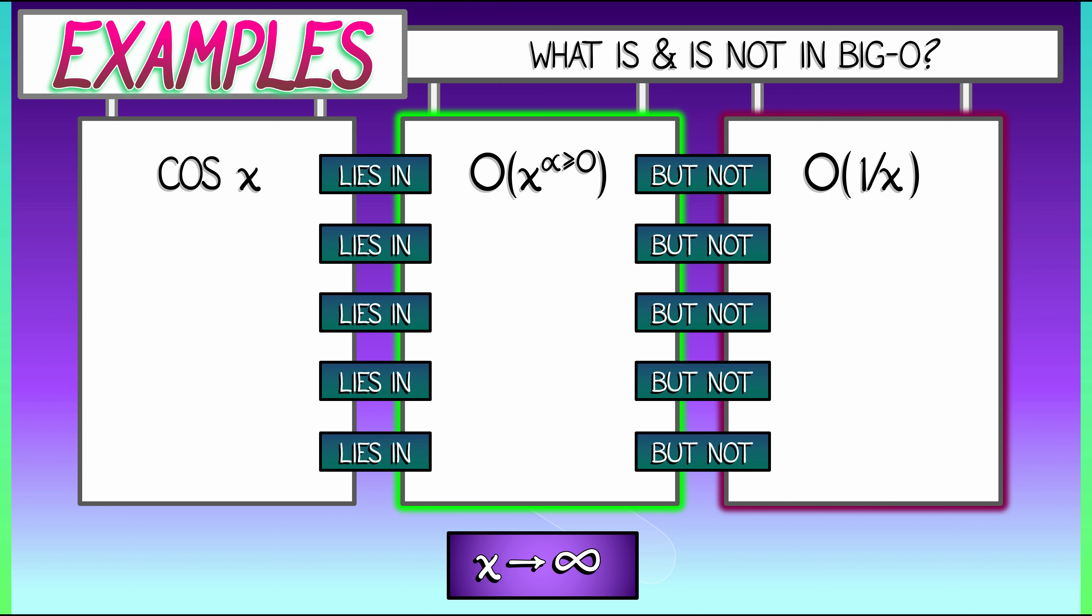Consider the function square root of x to the fourth plus one. What does that look like as x is going to infinity? Well, if x is like a million, this is like a million to the fourth plus one square root. That plus one is really not doing anything for large values of x. So this function really looks like square root of x to the fourth, that is x squared. And indeed, this function lies in big O of x squared. It enacts quadratic growth. But it is not in big O of x. It's definitely got quadratic growth. It would dominate that linear growth.